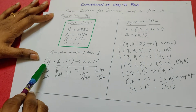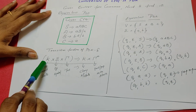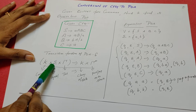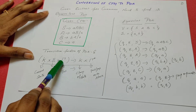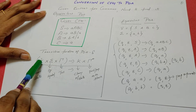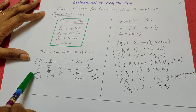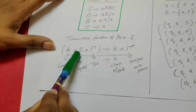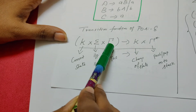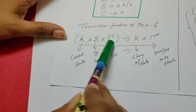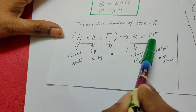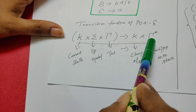The transition function of the pushdown automata is given like this. K is the state, sigma is the input symbol, and this notation indicates the top of the stack. From the current state, on reading the input symbol from the input tape, it checks what is available at the top of the stack. There may be a change in state by pushing or popping contents onto the stack.